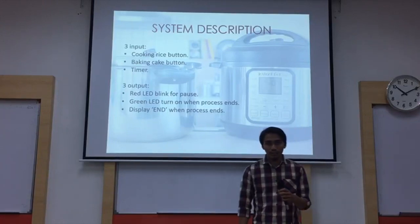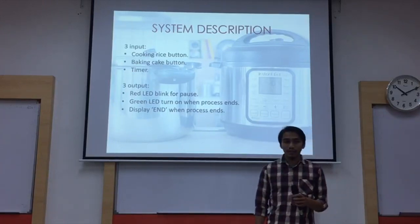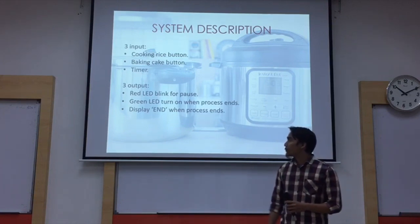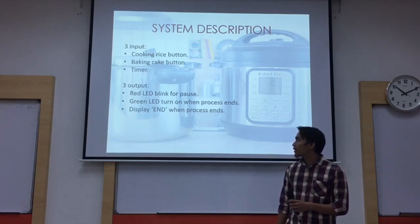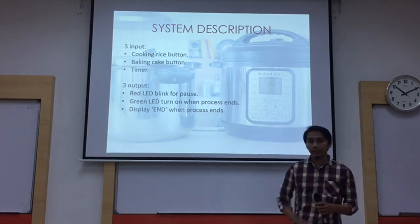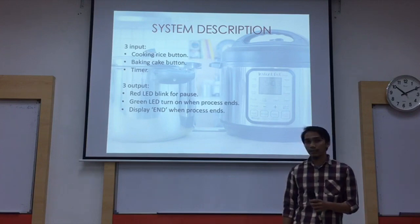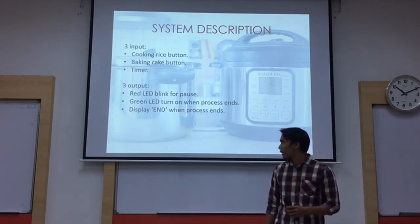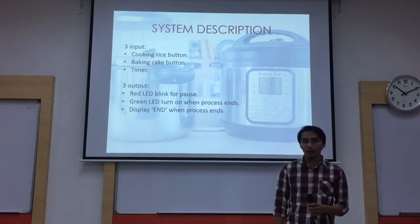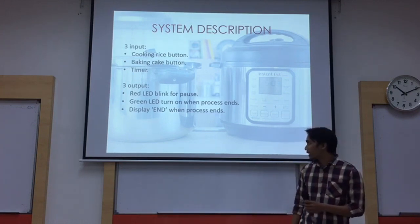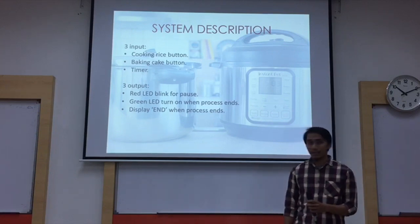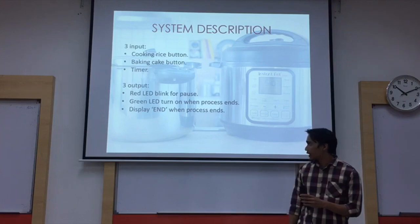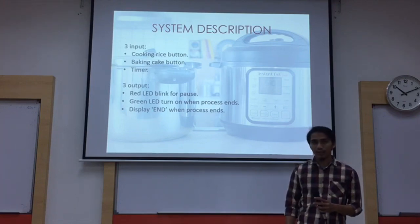Moving on to the system description, our pressure cooker comprises 3 inputs and 3 outputs. The first input is the cooking rice button, the second one is the baking cake button, and the third one is the timer button. As for the output, we have the red LED blink for pause, the second one is the green LED which turns on when the process ends, and the last one displays 'end' when the process ends.